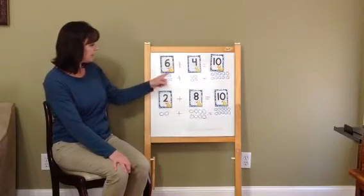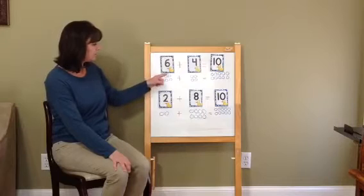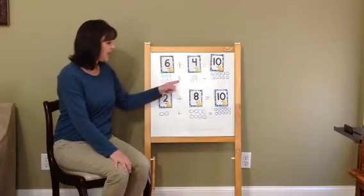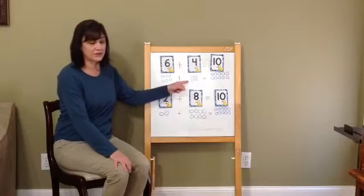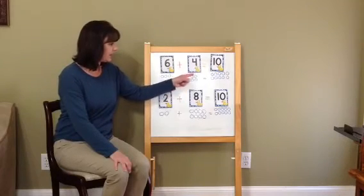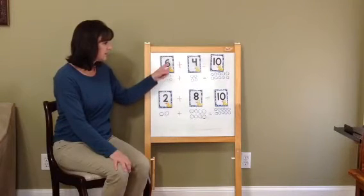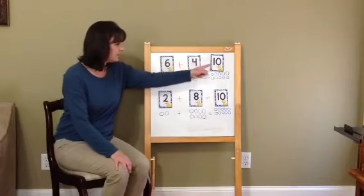So your numbers, if you have 6 circles, 1, 2, 3, 4, 5, 6, and you add 4 more, you'll continue counting, 7, 8, 9, 10. So we now know that 6 plus 4 equals 10.